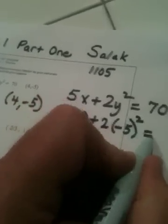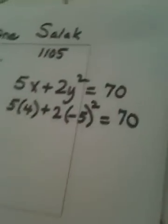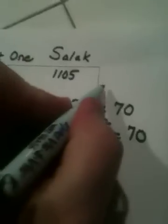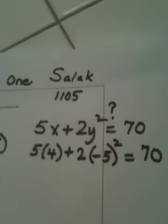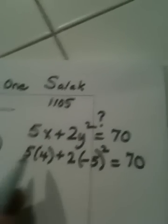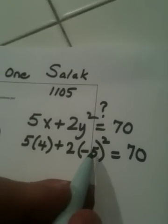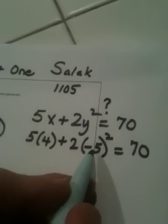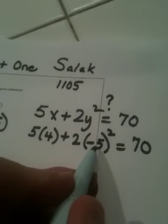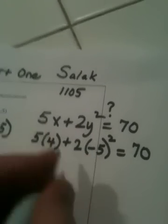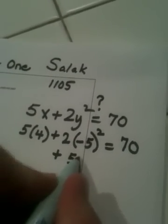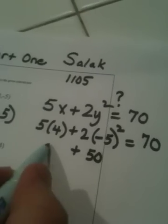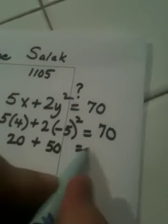This is supposed to equal 70. We don't know if it does, that's what the question mark means, but we're going to find out. Let's do the Please Excuse My Dear Aunt Sally. Negative 5 squared is 25, 25 times 2 is 50, 5 times 4 is 20. 70 equals 70.